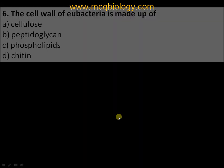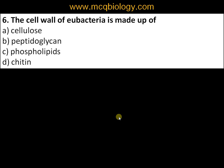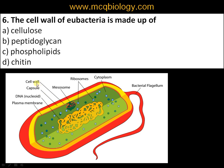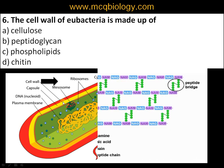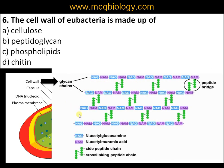Question number six: the cell wall of eubacteria is made up of: A) cellulose, B) peptidoglycan, C) phospholipids, D) chitin. The cell wall of bacteria is made up of peptidoglycan. It contains N-acetylglucosamine and N-acetylmuramic acid — both are sugars — and these sugar chains are joined by peptides, which is why it is called peptidoglycan. Plants have cellulosic cell walls, and chitin is seen in fungi.